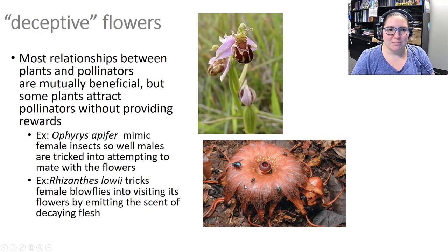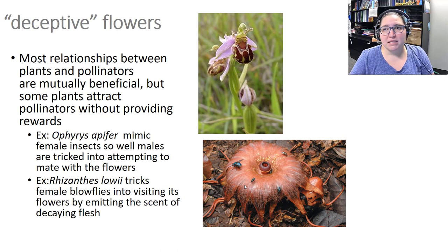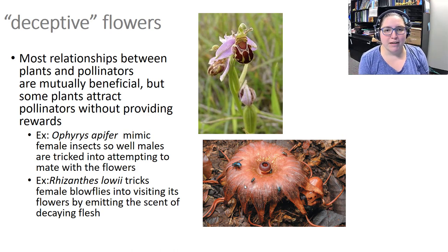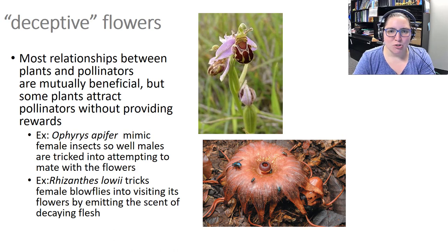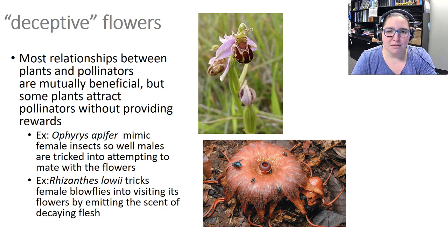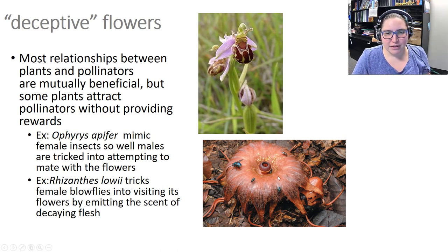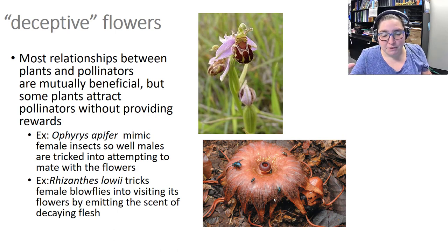Some flowers are deceptive — they attract pollinators without providing any reward. For example, one plant mimics female insects so well that male insects of that species are tricked into trying to mate with the flower, getting no benefit but moving from plant to plant, helping pollinate. Another plant tricks female blowflies by smelling like decaying flesh, so the flies go from one pseudopile of flesh to another, pollinating that way — but again the flies receive no reward.